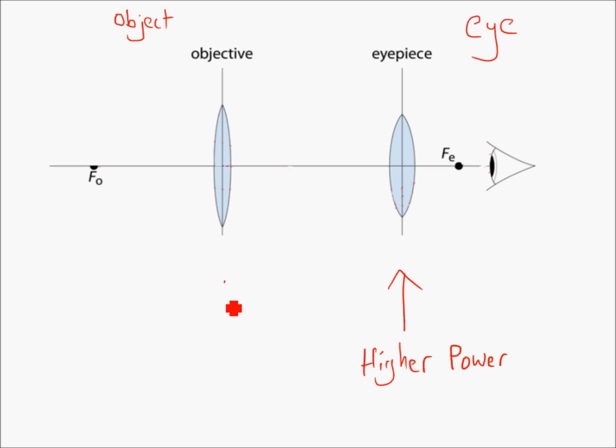And the objective lens is a low power lens. And they're combined together in order to work as a telescope. The easiest way that I remember that this is high power is that the eyepiece has got the P for power. This is the powerful lens.